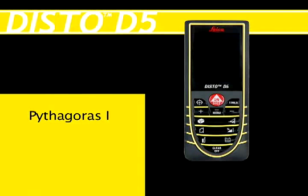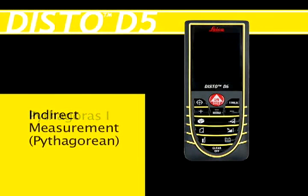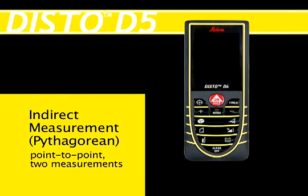Pythagoras 1, Indirect Measurement. Pythagorean Point-to-Point, Two Measurements. Example: measuring the height of a wall.